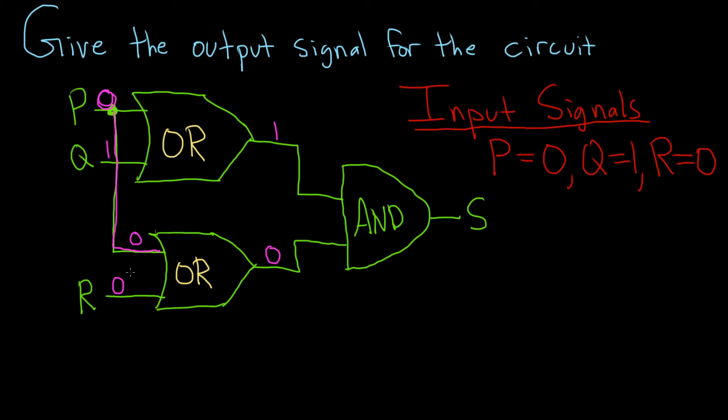Remember, OR will always be 1 as long as one of them is 1. But if they're both 0s, you're going to get a 0.